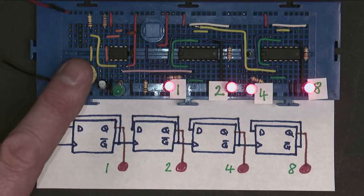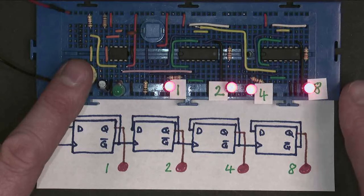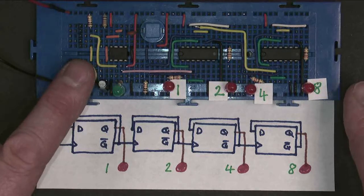Naught to fifteen, sixteen states, two to the power of four. Pressing again will take us on to the sixteenth count, which would need an LED over here, and all these go off.